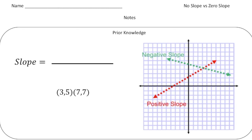So before we talk about no slope and zero slope, let's talk about the type of slope that you're familiar with already. So here if you notice the red line, this shows a positive slope and then the green line shows a negative slope. So a positive slope has a positive value and a negative slope has a negative value.